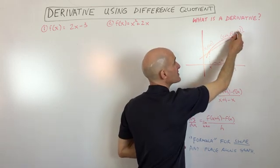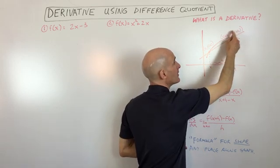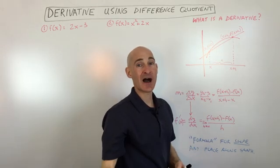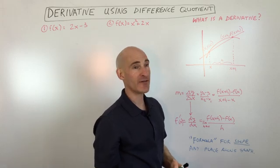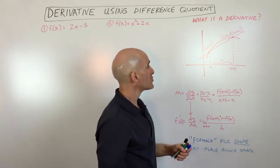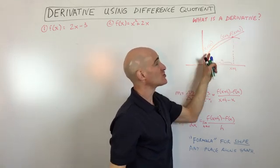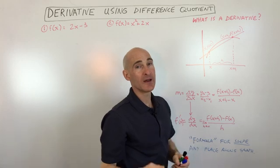Remember, whatever's in the parentheses, that's the input. f of x plus h — that's the output, that's the y value. So now what we're going to do is we're going to find the slope between these two points.